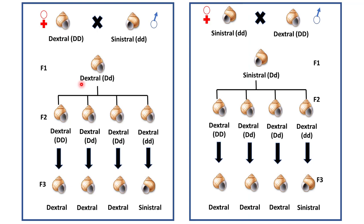So, here the mother is dextral with genotype capital D capital D, and the father is sinistral with genotype small d small d. If we cross them, all the F1 progeny would be capital D small d, and they are dextral. Why are they dextral? Because their maternal genotype is capital D capital D, which is dextral.